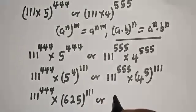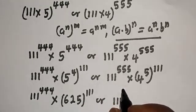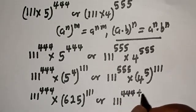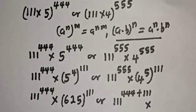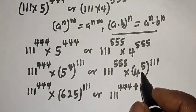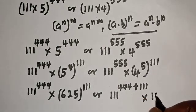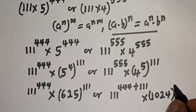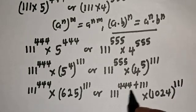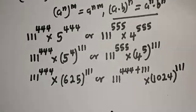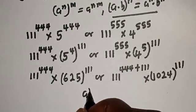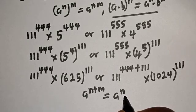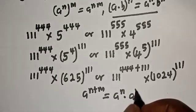Or 111 raised to the power 555 can be written as 111 raised to the power 444 plus 111. And 4 raised to power 555, which equals 4 raised to power 5 raised to power 111, becomes 1024 raised to the power 111. Using the rule that a raised to power n plus m equals a raised to power n multiplied by a raised to power m.